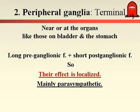The other type is the peripheral ganglia, present on or near the organ — like on the heart, stomach, or bladder. These ganglia are present far from the spinal cord, so they have long preganglionic nerve fibers starting from the spinal cord and ending at the organ. But the postganglionic nerve fiber is short and does not branch, so their effect is localized to that specific organ. Most of these peripheral ganglia have parasympathetic function.